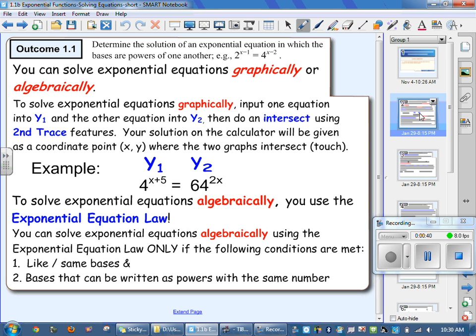Go in your calculators and go to y equals. You're going to type in, since there's more than one thing for an exponent, the exponent has to be in brackets. So you're going to type in 4 exponent brackets, x plus 5 brackets, into y1.